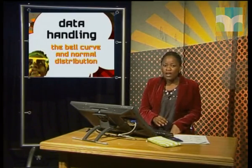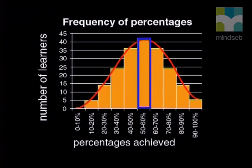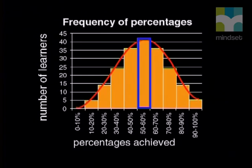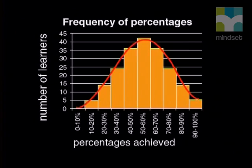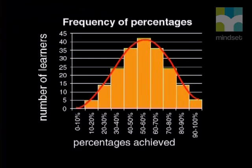Let's now look at this normal distribution in combination with the other statistical properties we learned: mean, median, mode, range, and standard deviation. Looking at the graph, it's easy to see the mode and median. The mode is the value that occurs the most — here it's the percentage between 50 and 60. The median is the middle value, also between 50 and 60%, approximately 55%. Because the graph is symmetrical, evenly shaped about its center line, the mean will also be approximately 55%. This is a special property of the normal distribution when a graph is symmetrical.